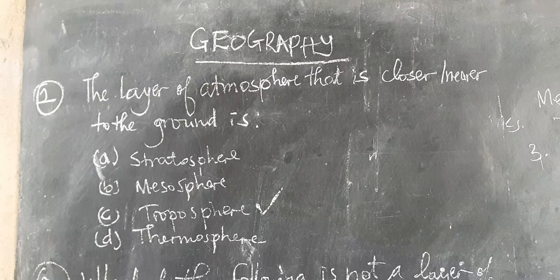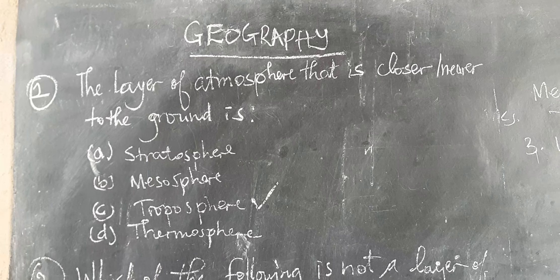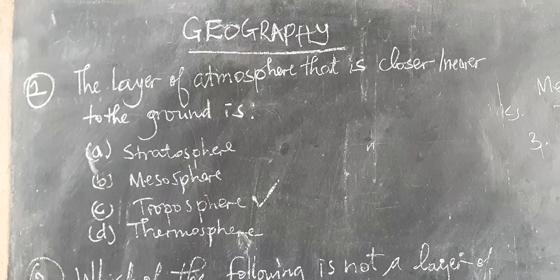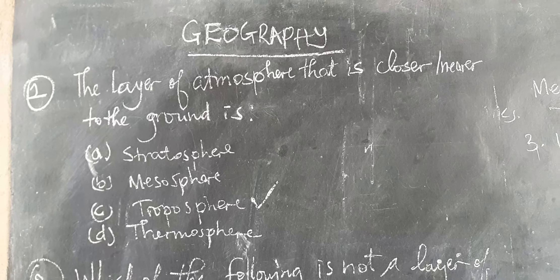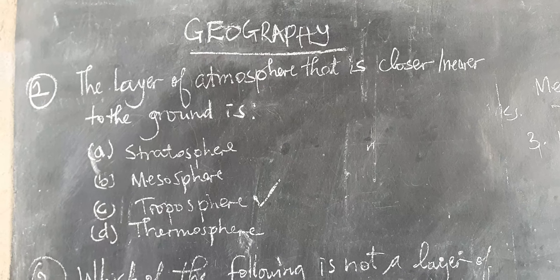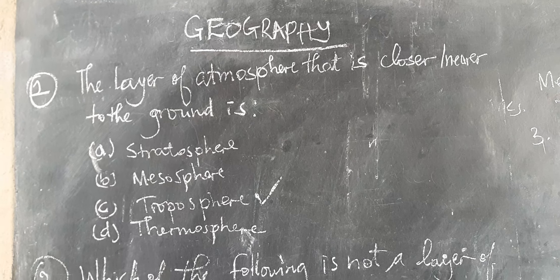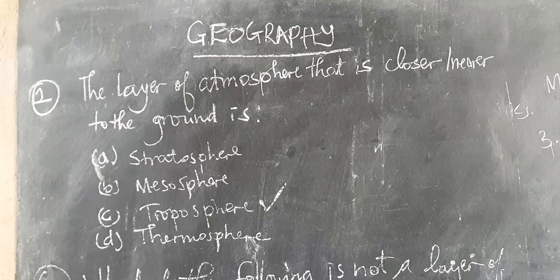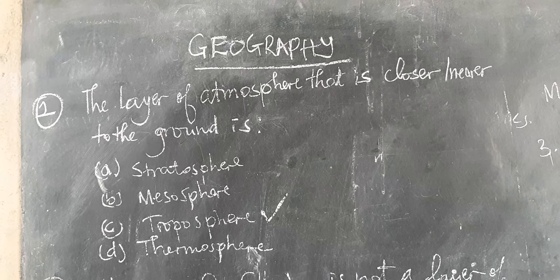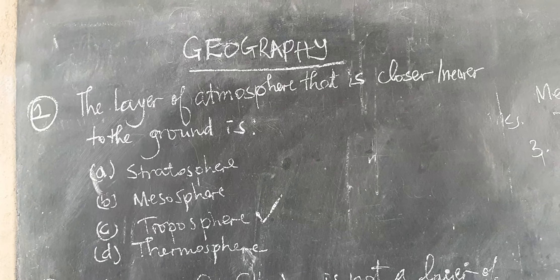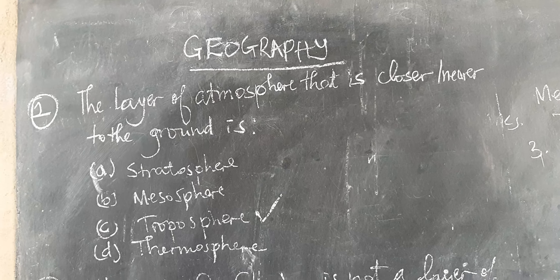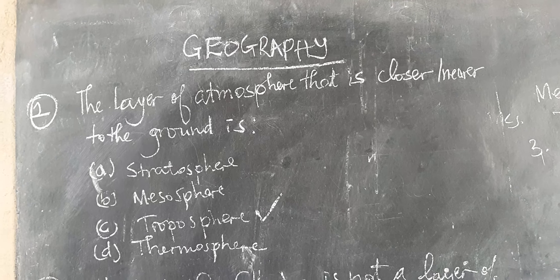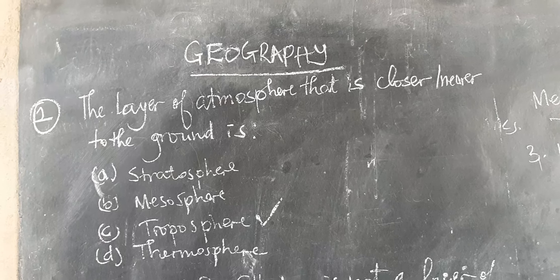Question number one is asking: which layer of atmosphere is closer or nearer to the ground? A. Stratosphere, B. Mesosphere, C. Troposphere, D. Thermosphere. The correct answer is Troposphere, meaning that the troposphere is the closest layer of atmosphere to the ground.